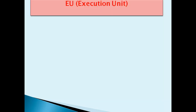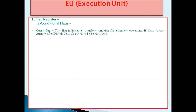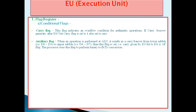Let us see in detail the Execution Unit. The first part is the Flag Register, and there are two types: Conditional Flags and Control Flags. In Conditional Flags, the first flag is the Carry Flag. This flag indicates an overflow condition for arithmetic operations. If a carry or borrow is generated after the D15 bit, the Carry Flag is set to 1, else set to 0.